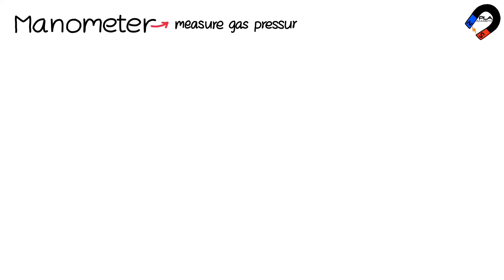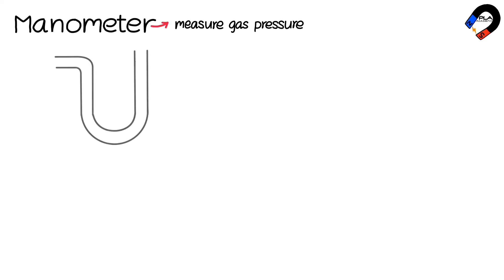A manometer is a device used to measure gas pressure. The simple mercury manometer consists of a U-shaped tube filled with mercury, which has a density of 13,600 kilograms per cubic meter. Atmospheric pressure acts on both sides, causing the mercury levels to be the same on both sides.